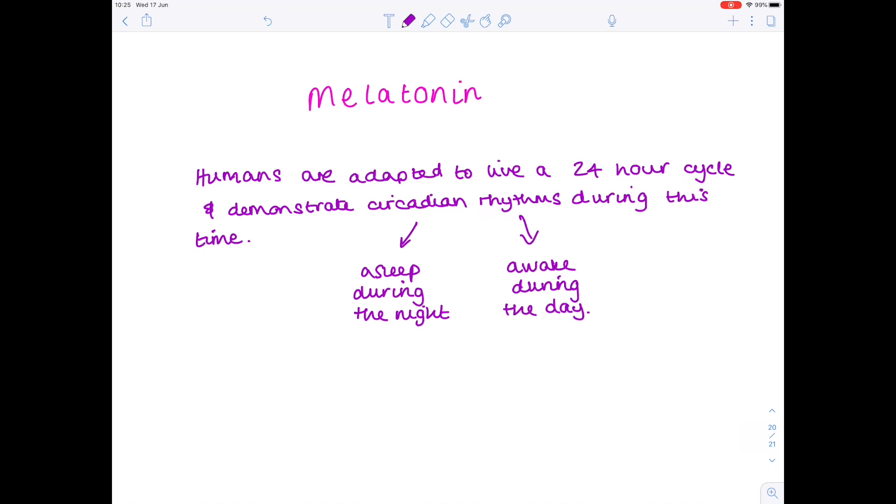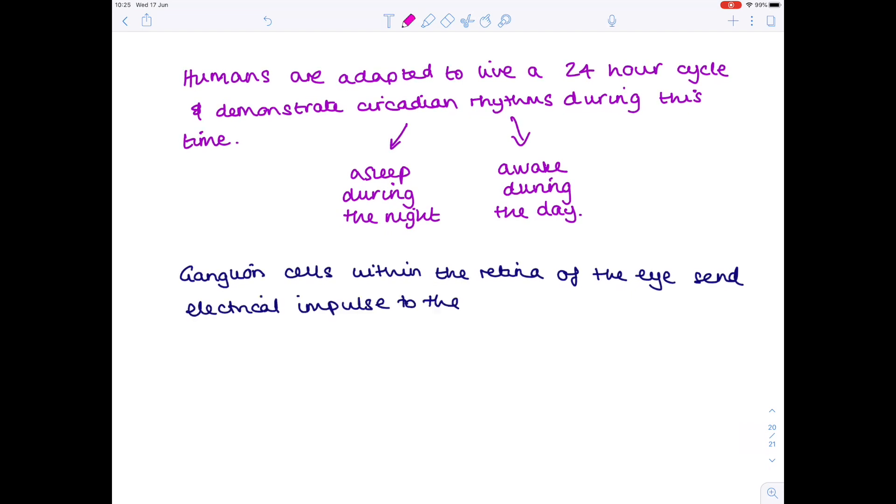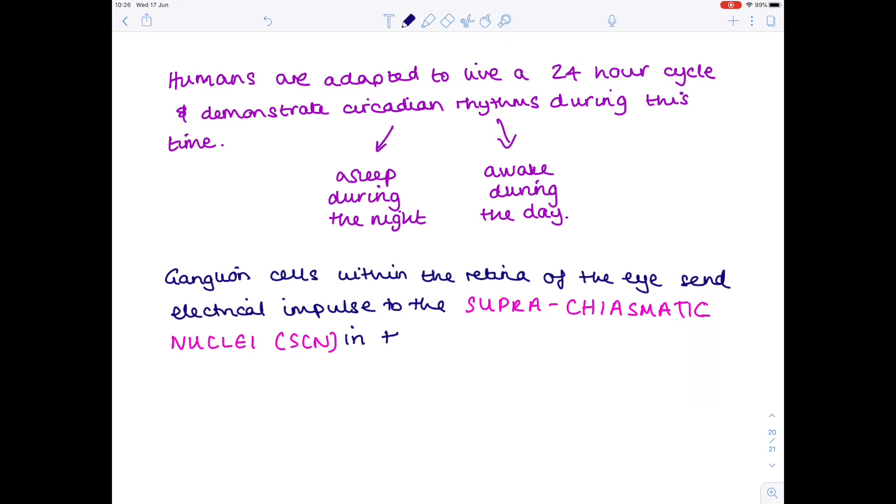But how does the body know if it's night or day? Well, obviously it's your eyes which detect light. So ganglion cells within the retina of the eye send electrical impulses to the suprachiasmatic nucleus, and that's found within the hypothalamus of the brain.